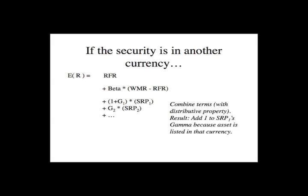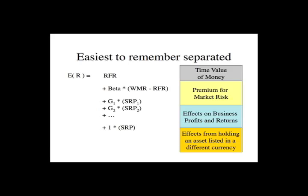So that clears that up. What they can do on the exam, if they want to be really nasty, is give you a gamma that's something like negative 0.5 and then try to be sneaky about having you add one. So do a problem or two once this gets clear to you. To sum up this part: it's easy to build up the International Capital Asset Pricing Model if you think about it as the time value of money plus a premium for market risk, plus a bunch of gammas reflecting the effects on business profitability, then decide what currency the security is listed in and whether you need to add the effect from holding an asset in a different currency.